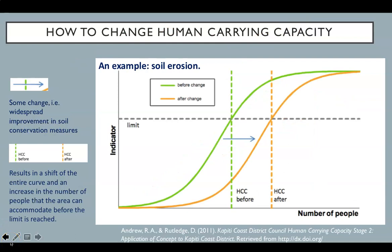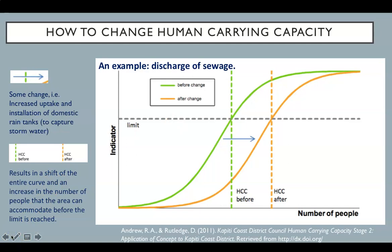Similarly, this figure shows a sigmoidal example, which could be soil erosion, where some change — for example, widespread improvement in soil conservation measures — results in a shift of the entire curve and an increase in the number of people the area can accommodate before the limit is reached. Another example of behavior influencing carrying capacity is visualized with this figure, which could be stormwater causing a discharge of untreated sewage, where the shift in the curve might result from an increased uptake and installation of domestic rain tanks, again shifting the curve and allowing more people to be supported by the area.